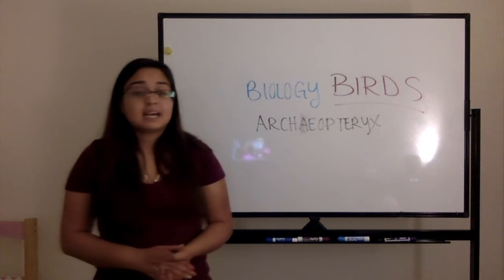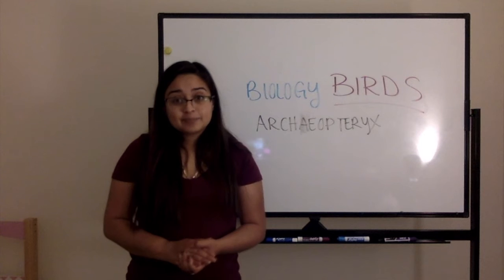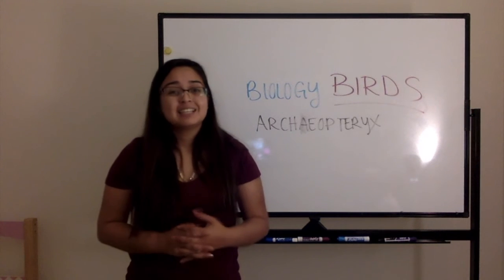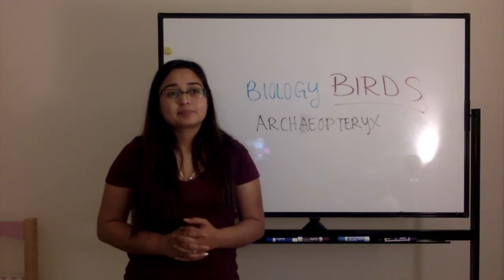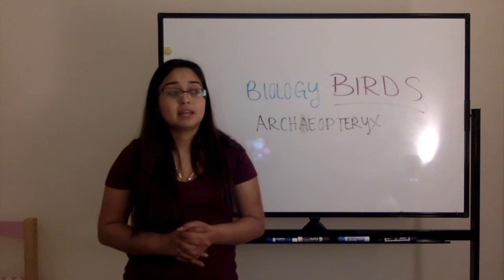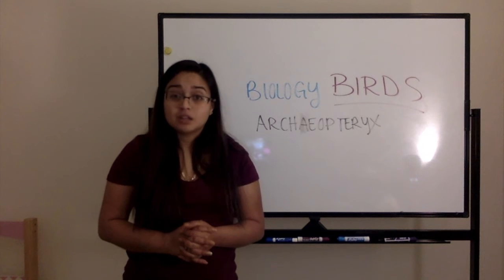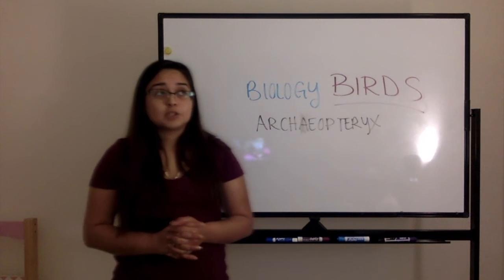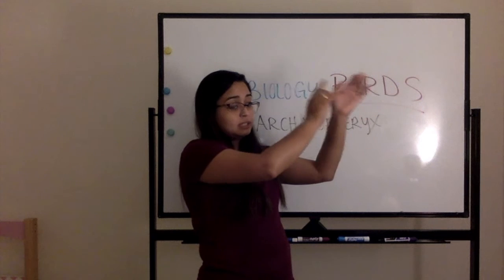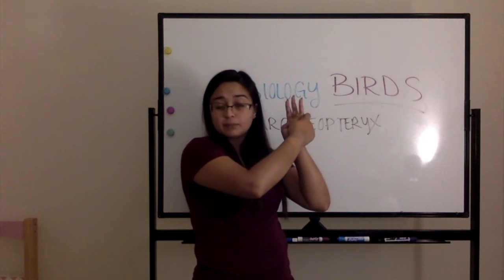Some characteristics it had that birds no longer have: it had teeth — birds no longer have teeth, at least most of them don't. And also, on its wing, at the tip of the wing, it had three finger-type claws.